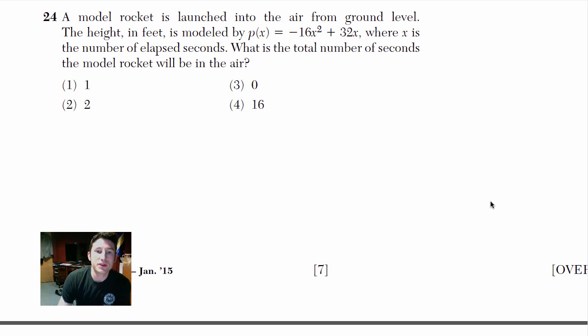So a model rocket is launched into the air from ground level. The height in feet is modeled by P of X equals negative 16X squared plus 32X, where X is the number of elapsed seconds. What is the total number of seconds the model rocket will be in the air? So before I go and solve this one, I want you to think about what the graph is going to look like and what the graph actually means. If you had a graph of this, it looks something like this.